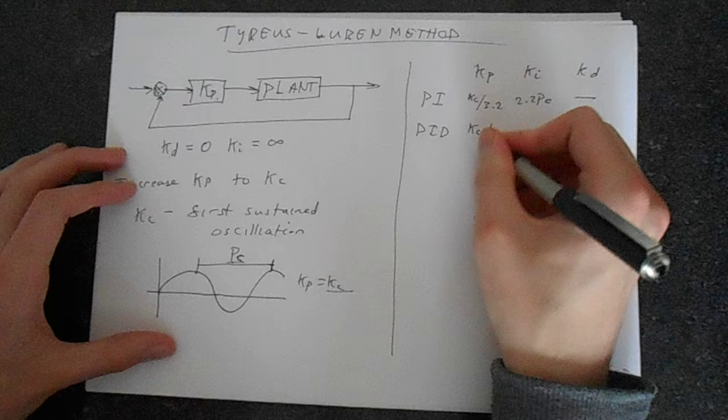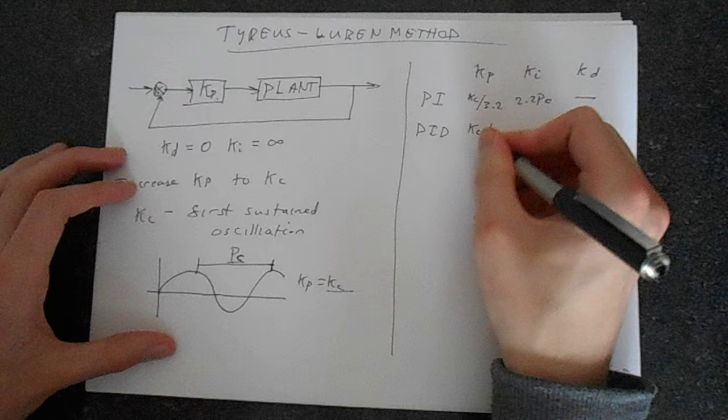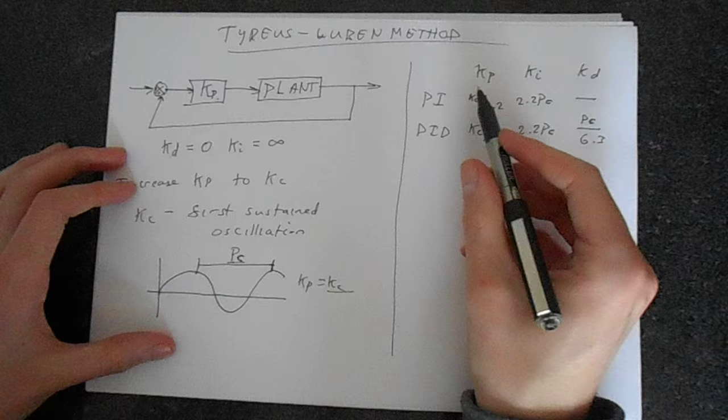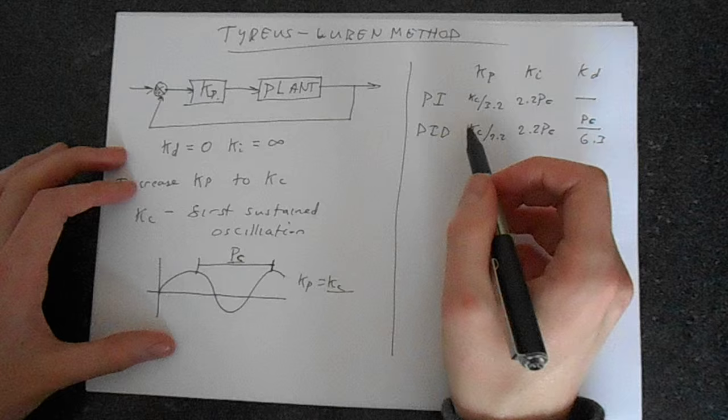Here's KC over 2.2 times PC, and lastly we've got this PC divided by 6.3. That gives you what gains you have to set on your various components of the PID controller, or your PI controller in this case.